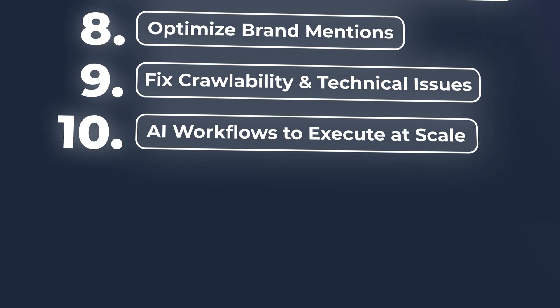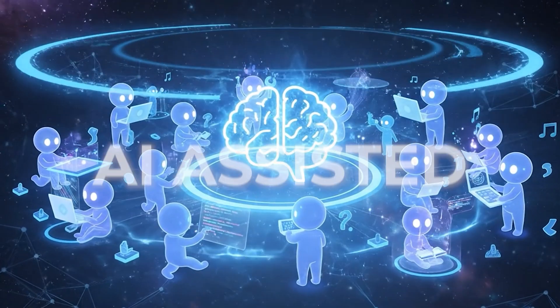Number 10 is to use AI workflows to execute at scale. You don't need to publish content completely manually anymore. When we talk to some of the best SEOs in the world, they're all using AI to help them. It's AI-assisted, meaning that AI might help you 50, 60, 70% of the way, and then you have a human doing 30, 40, 50% of the work to review the content. You have one human now that can do 10x more work, 100x more work. You want to leverage AI workflows to do that. These are just 10 things you can do from an answer engine optimization standpoint.